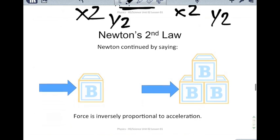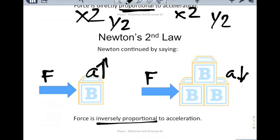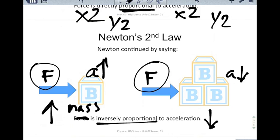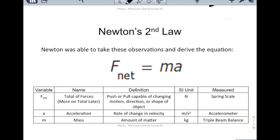Newton's second law also says that mass is inversely proportional to acceleration. If you have the same force exerted on two different masses, the acceleration of the smaller mass will be greater. Think of pushing a toy car versus pushing a real car with the same force — their motion will be very different. As mass increases, acceleration decreases, assuming the force is the same. We can combine these two parts of Newton's second law into the equation: the net force equals mass times acceleration, F = MA.